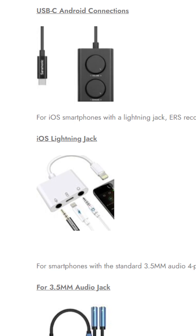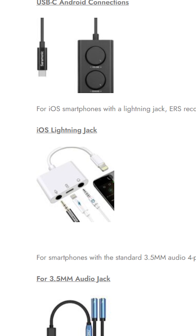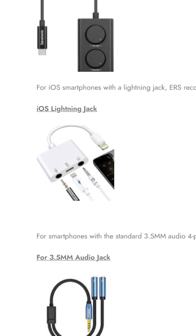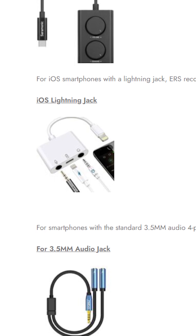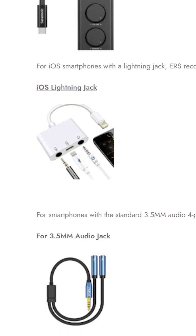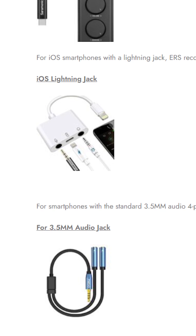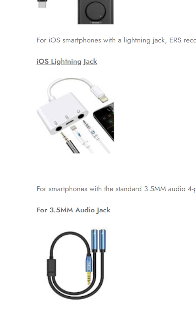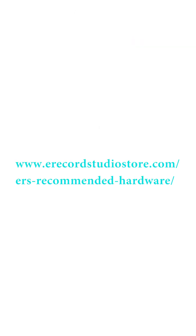Please note: when recording, use plug-in type earplugs or headphones with a good microphone. Most Bluetooth headphones can cause a lag in your recordings and do not record instruments well, although some might be sufficient. To have improved audio quality, you can use an audio interface for a more direct and higher quality recording. You can use one of the three audio interfaces available on Amazon — the links by phone input type can be found at erecordstudiosstore.com/ers-recommended-hardware.